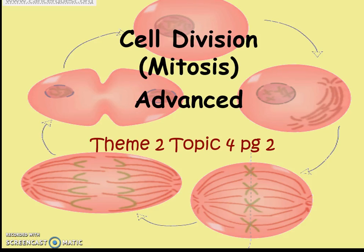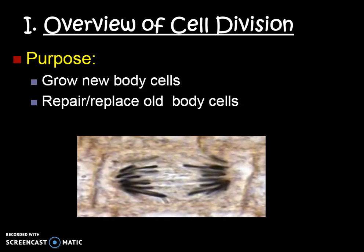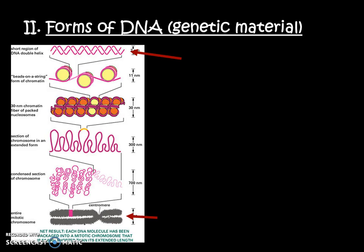Hello biology students, today we're going to be learning even more about cell division, specifically mitosis, in a more detailed advanced version. This is our second page of notes. Let's overview cell division and why we need the cell cycle — we don't want the cell cycle to go wrong because that's how we get diseases and cancer. Our goal is to grow new body cells, repair and replace old body cells, and all of this needs to happen in perfect synchronization of moving DNA around the cell.